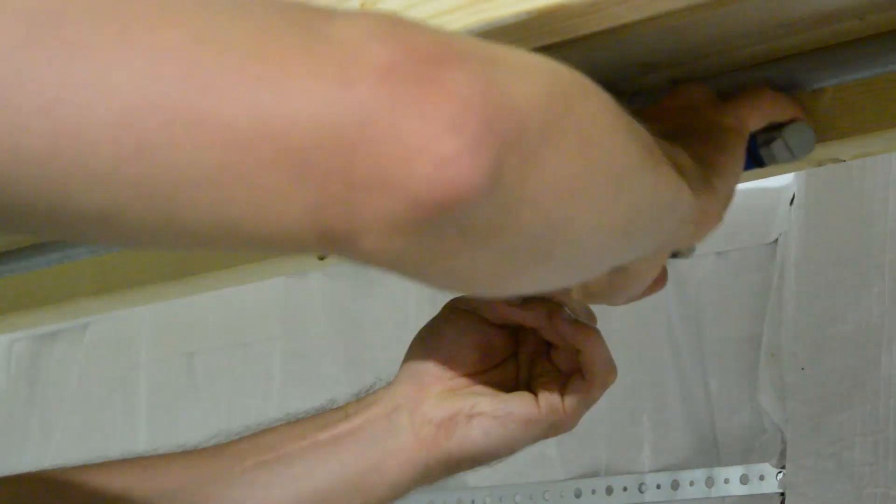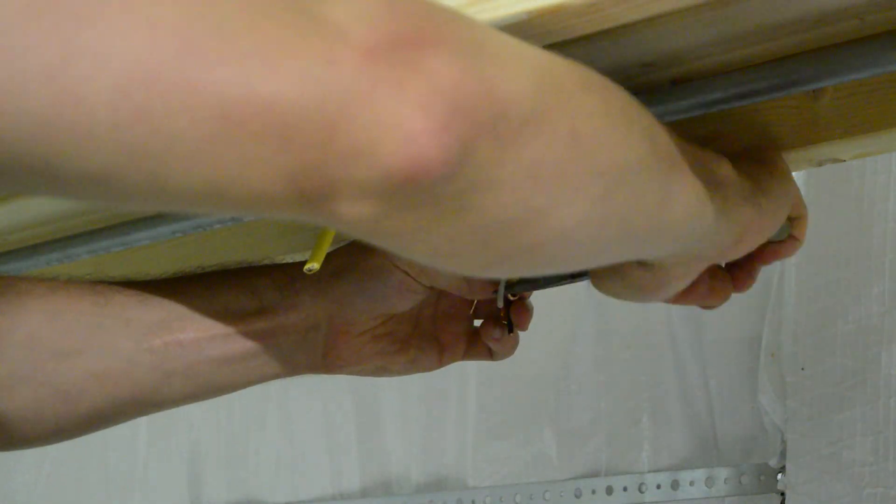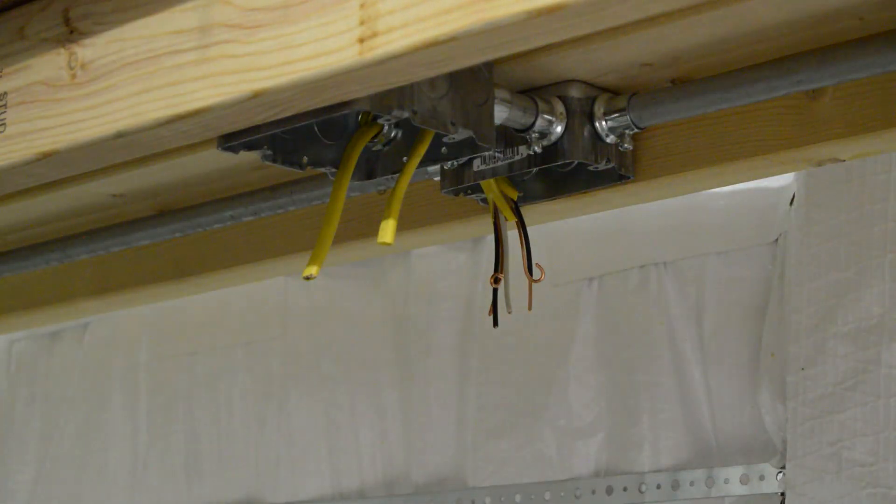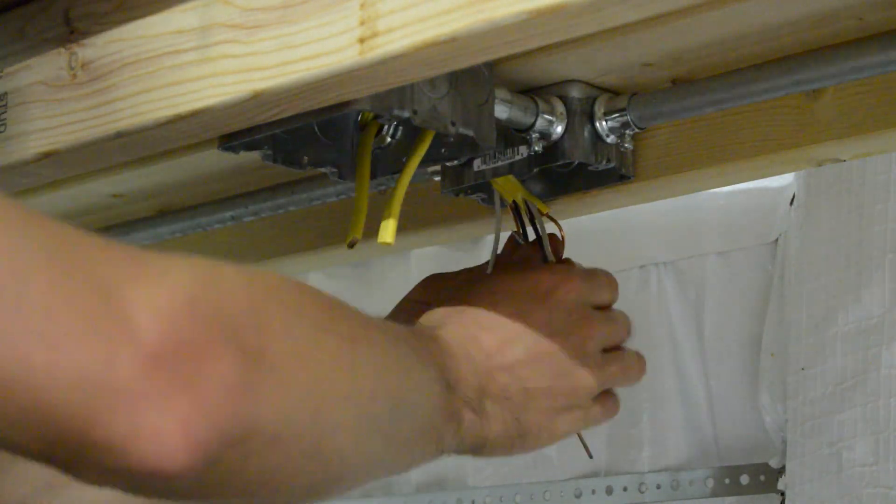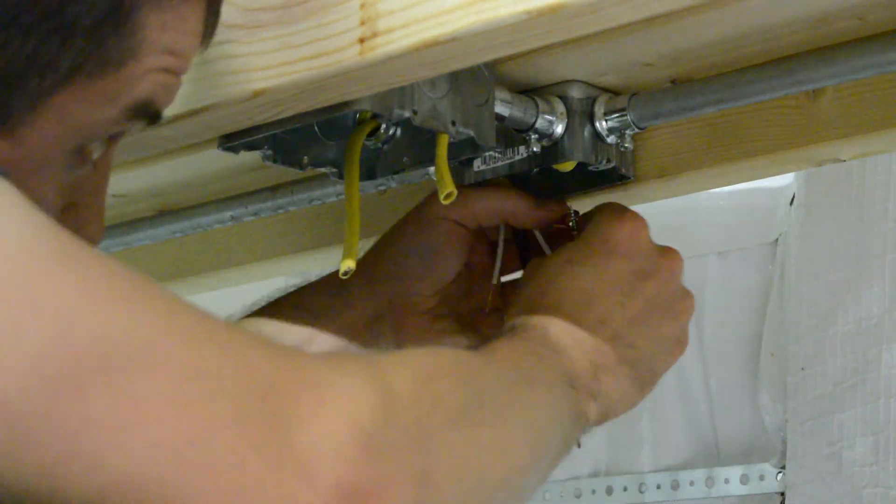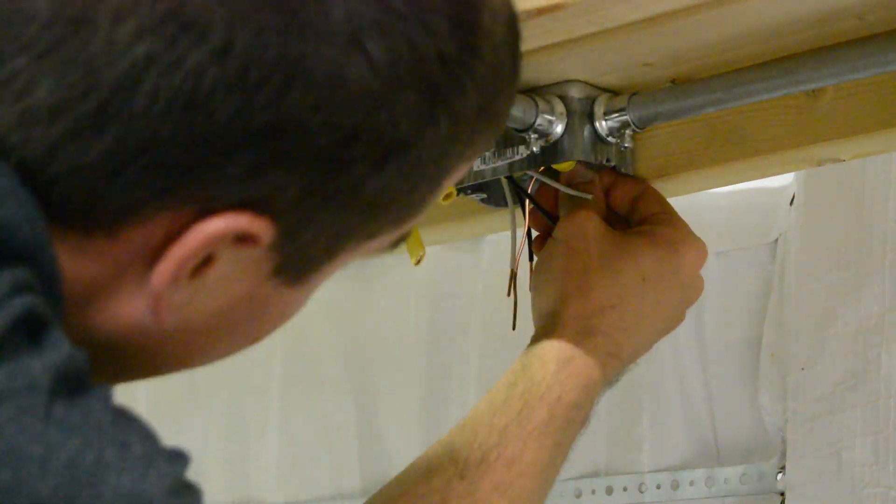And off we go again doing the next set. As you'd expect these are all 120 volt outlets that are all wired in parallel with each other. They simply just chain off of one another, same as you would see in the house.